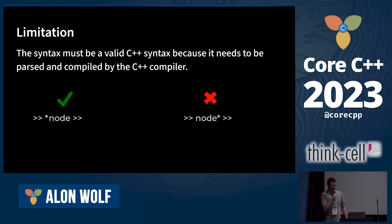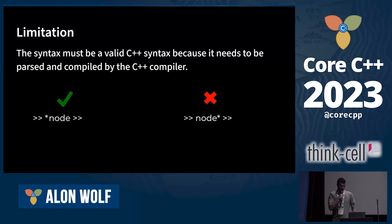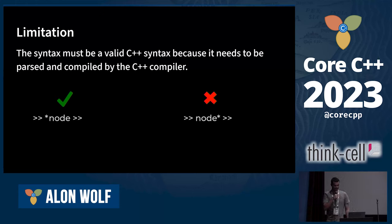There are still limitations. The syntax must be valid C++ syntax because it needs to be compiled by the compiler. For example, if we look at part of the code from the previous slide, we can write star-node. But if we wanted to write node-star, we will get a compilation error saying that the unary star operator must be on the left side of the expression.